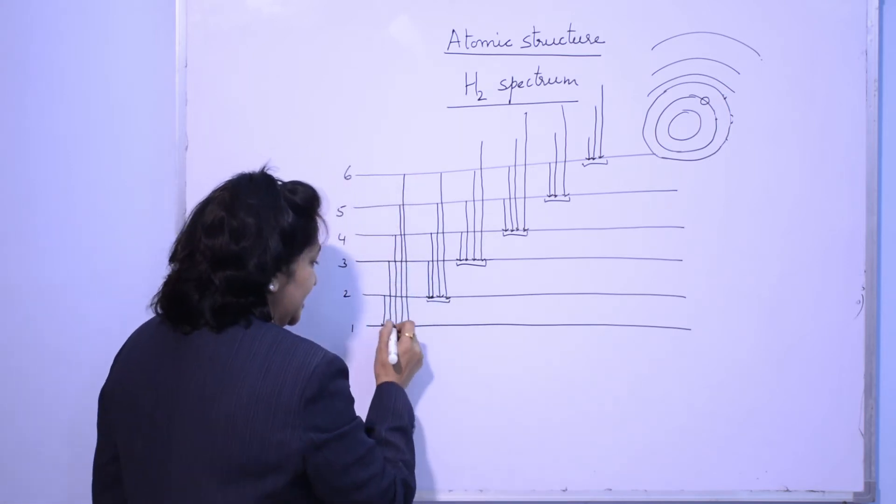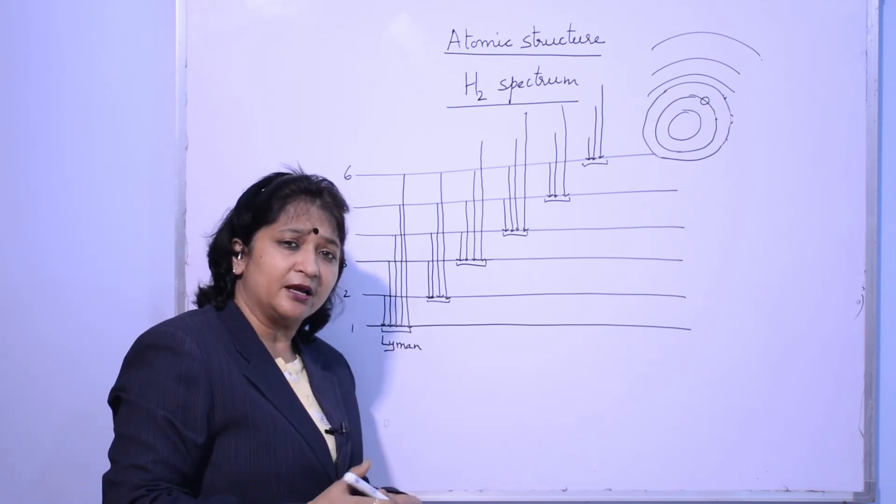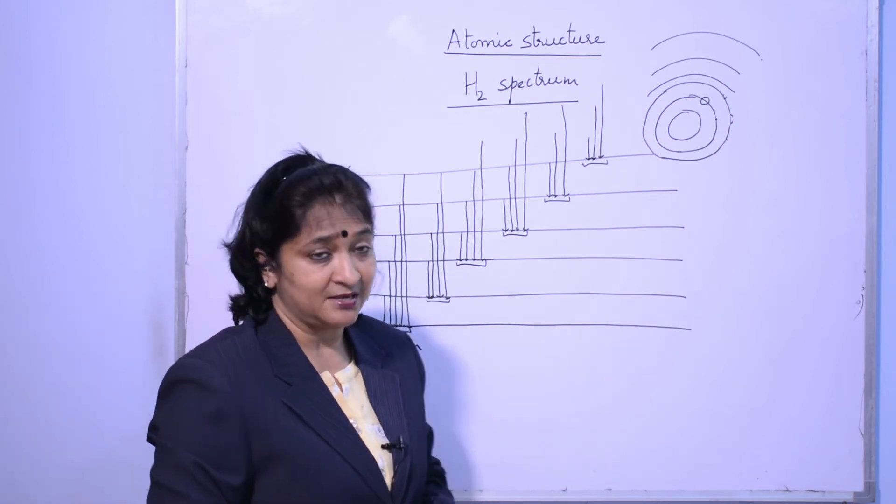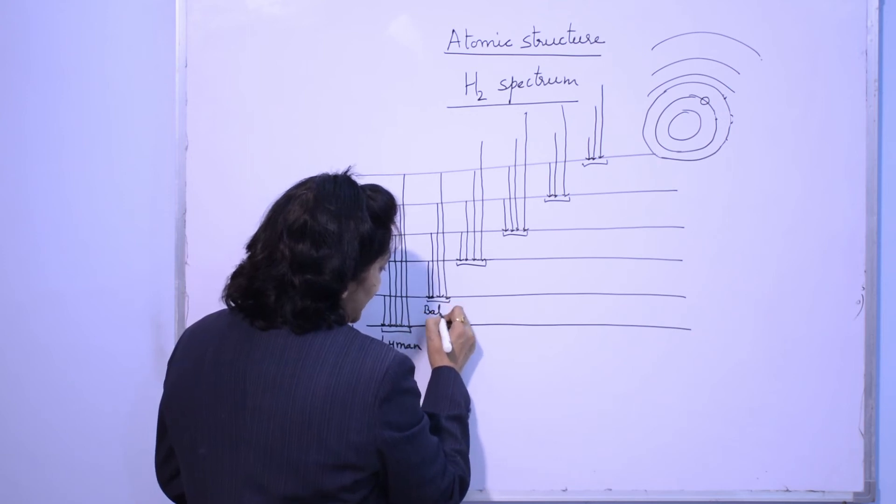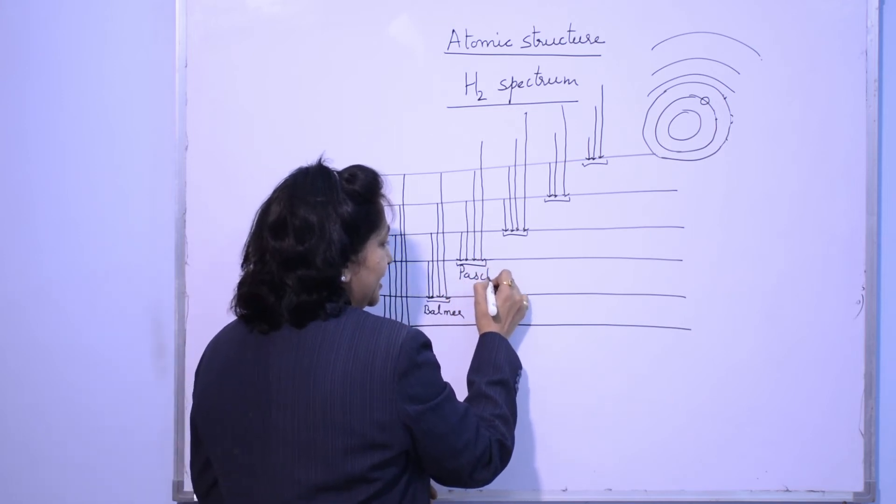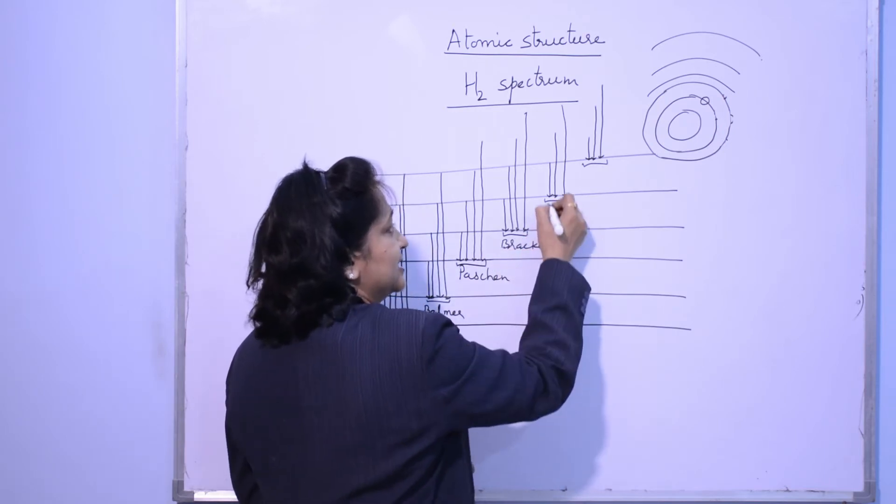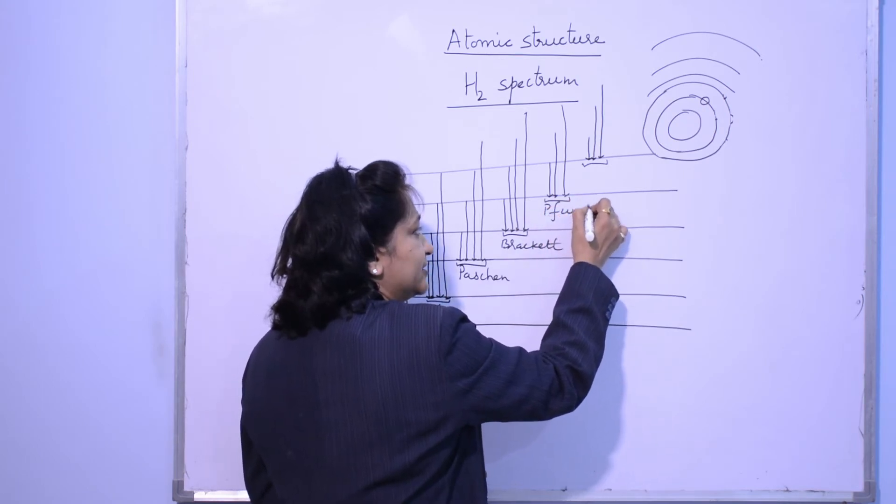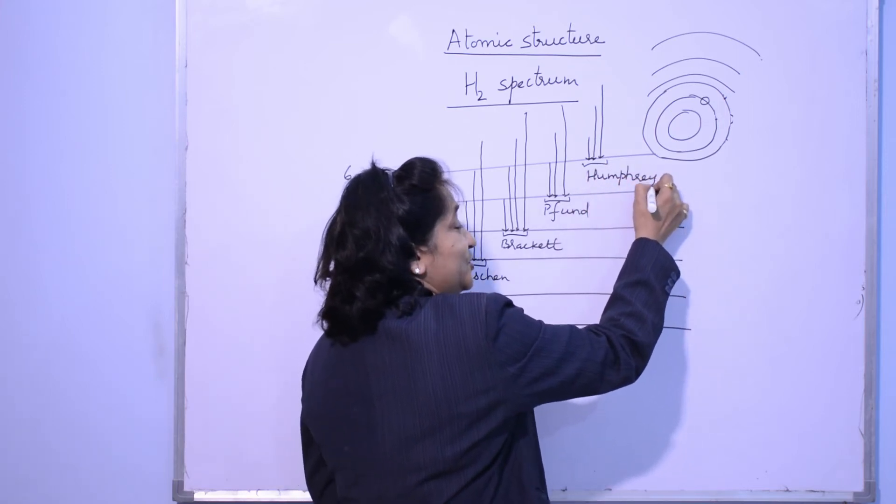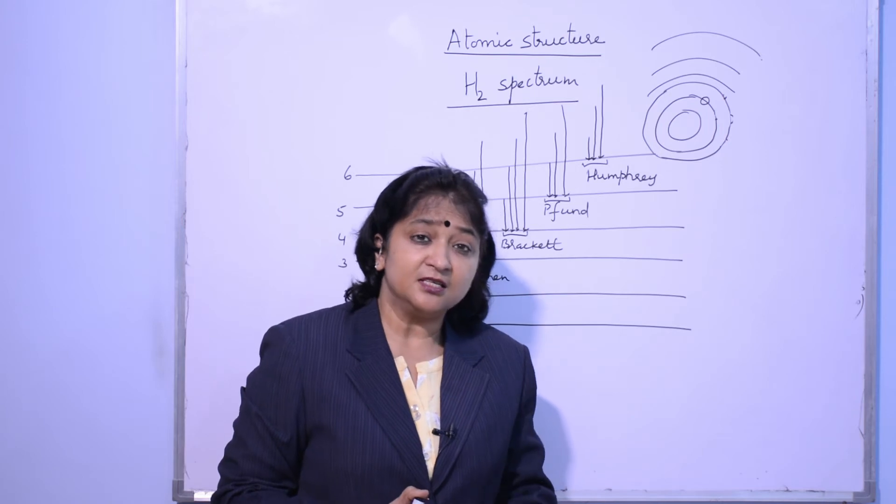Now all these series have a particular name. Whenever electron comes to first level, it is called Lyman series. All the electrons, from whatever state they are coming, if they are going to ground state, to first level, we call it Lyman series. If it is coming to second level, it is called Balmer series. If it is coming to third level, it is called Paschen series. If it is coming to fourth level, it is called Brackett series. If coming to fifth, it is called Pfund series. If coming to sixth, it is called Humphrey series.